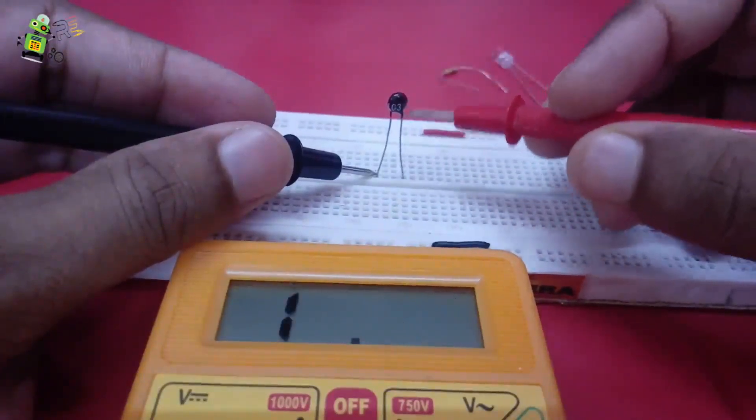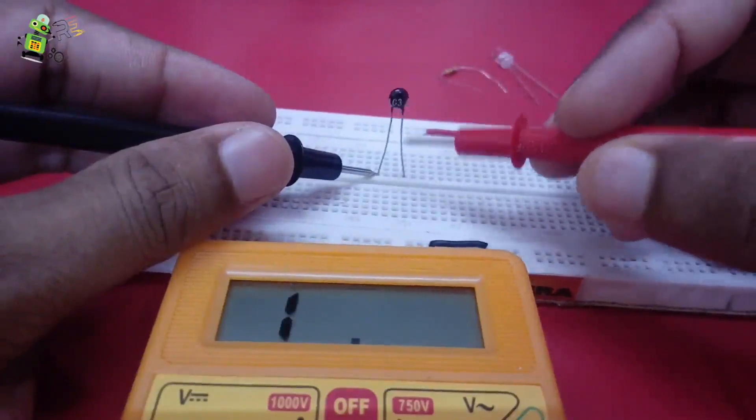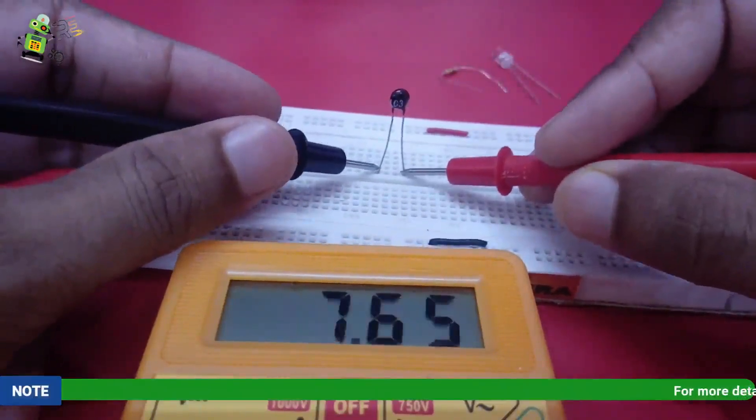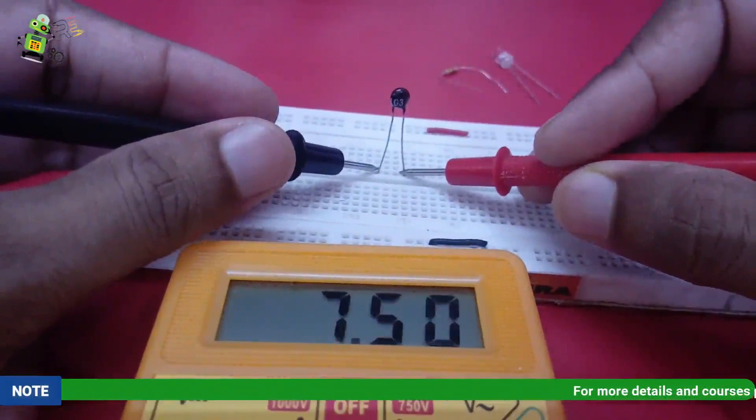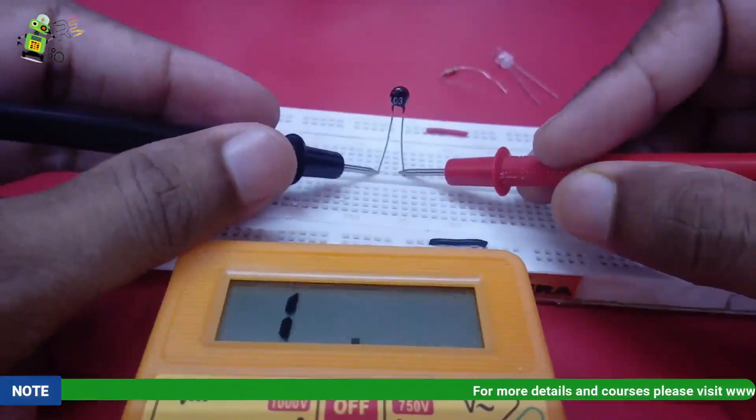Once we apply more cooling effect on this thermistor, it will show the 10k value. So we are having 7.5 kilohm now in the current situation when I am making this video.